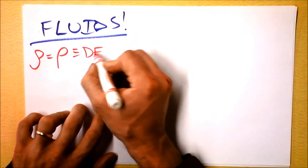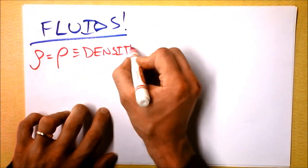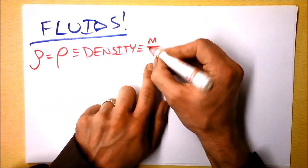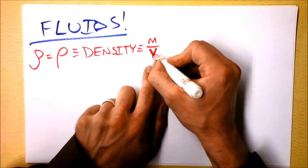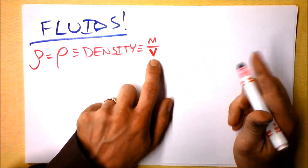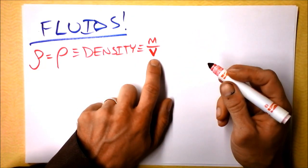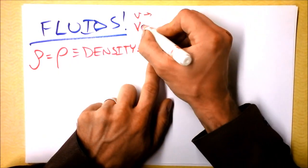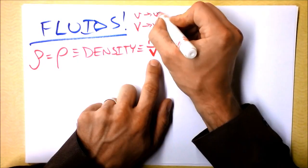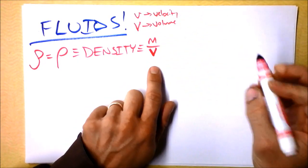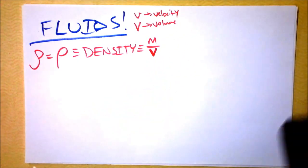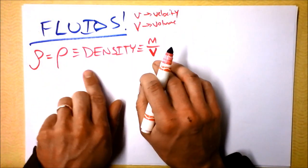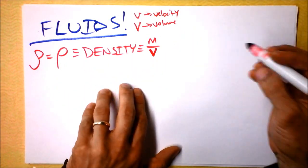Density is defined as mass over volume, and again we have an issue with notation. This is a capital V. Notice it doesn't have any wings, whereas this would be velocity. This will be volume. We can use this definition of density for all sorts of cool things in fluids, but first let's discuss some typical densities.